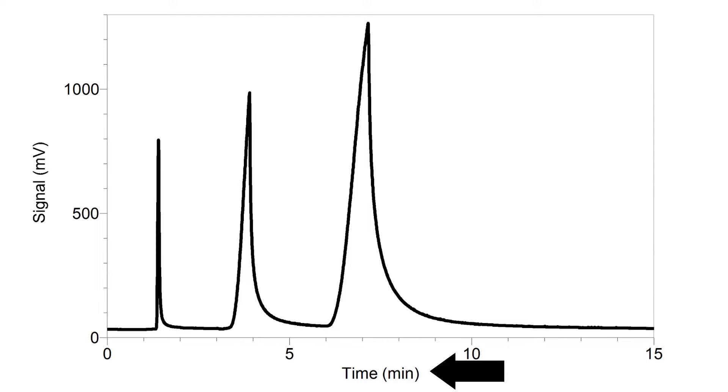The y-axis displays the measured response of the analyte peak in the detector. The baseline shows the signal from the detector when no analyte is eluting from the column. The baseline should be low and straight.